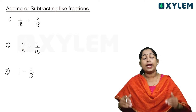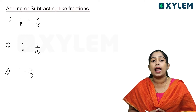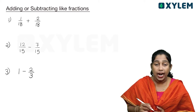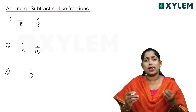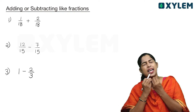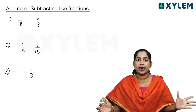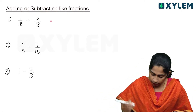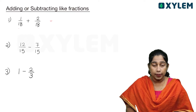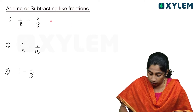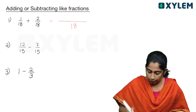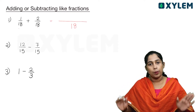The denominator is the same for like fractions. Addition is very easy to do. This is the denominator — the same denominator, which is 18. That's the denominator: 18.